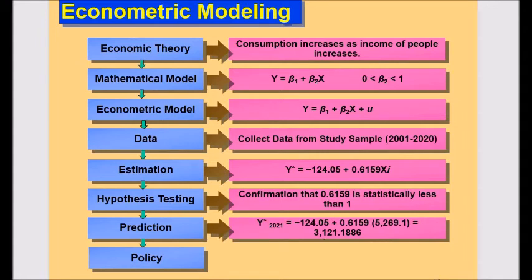Next up is prediction or forecasting. As you have basic solved regression equation for consumption now, Y hat is equal to negative 124.05 plus 0.6159 X. You can predict consumption expenditure for 2021.